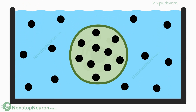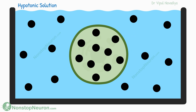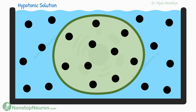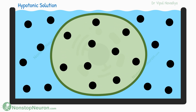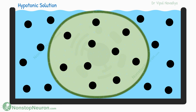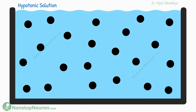The other option is a hypotonic solution — a solution with a lower concentration of impermeant solutes. In such a solution, the water moves from outside to inside, so the cell swells. This also happens till equilibrium is achieved. If the solution is too hypotonic, the cell might even burst.